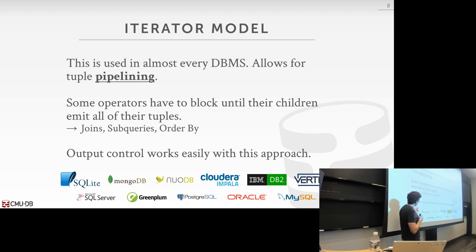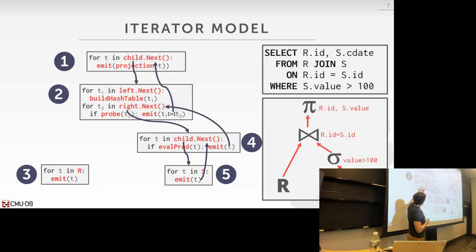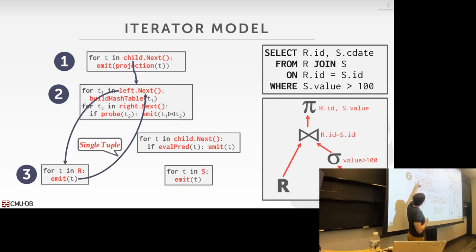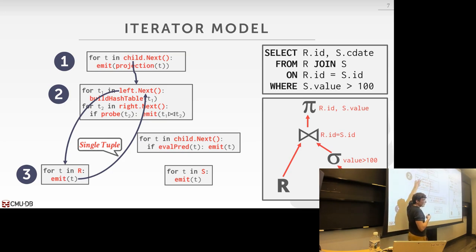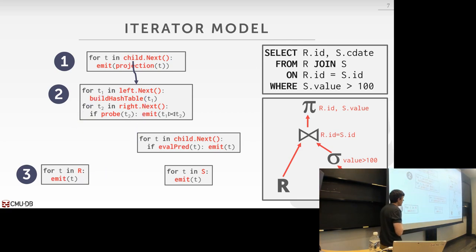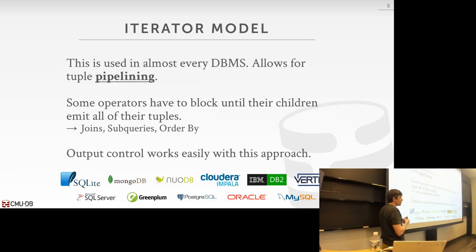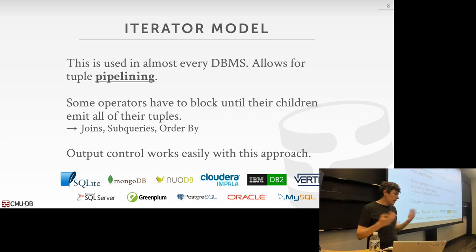Some operators cannot allow pipelining all the way up — these are called pipeline breakers. These are operators that require more data from their children before proceeding. The hash join on the left side is a perfect example: I get a tuple and build a hash table, but I can't process it further up the tree because I don't know if it will match anything on the right side yet. ORDER BY and subqueries are similar — anything that requires more tuples before moving up is a pipeline breaker, and they're unavoidable.